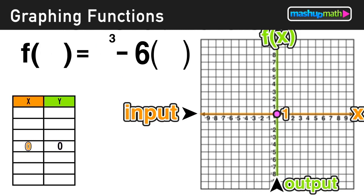So now what happens when we input 1 into this function? When the x-value is 1, we replace x with 1 in the equation and then solve. 1³ is just 1, -6 times 1 is just -6, and 1 - 6 = -5.